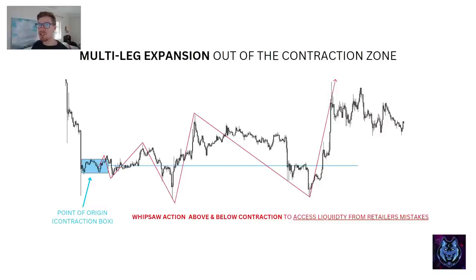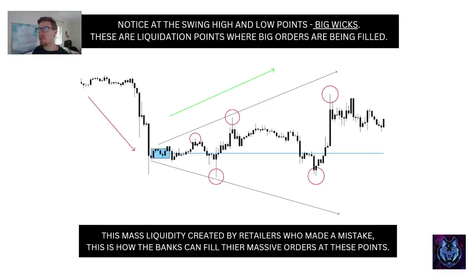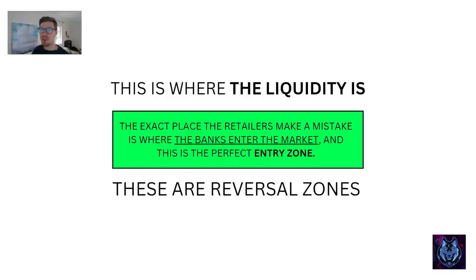It keeps doing this until the banks have filled all their orders, and then it goes into the trending phase where the institutions can drive the price and exit at favorable prices. Notice that the swing high and low points — these big wicks — are liquidation points where big orders are being filled. If you look at your charts, you will always notice at the swing highs and swing lows you get these big wicks. This shows us that massive orders are being filled, retailers are getting stopped out, and institutions are entering the market off of the retailer's liquidity.